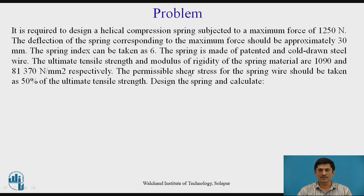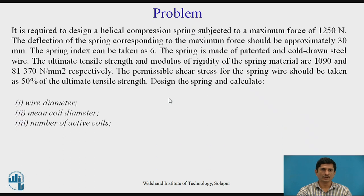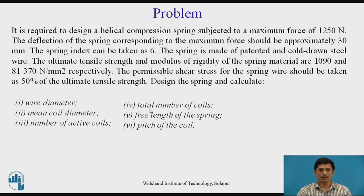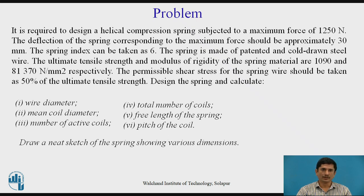The permissible shear stress for the spring wire should be taken as 50% of the SUT. Let us design the spring and calculate: first the wire diameter, second the mean coil diameter, third the number of active coils, then the total number of coils, free length of the spring and the pitch of the coil. At the end we need to draw a neat sketch of the spring showing various dimensions.